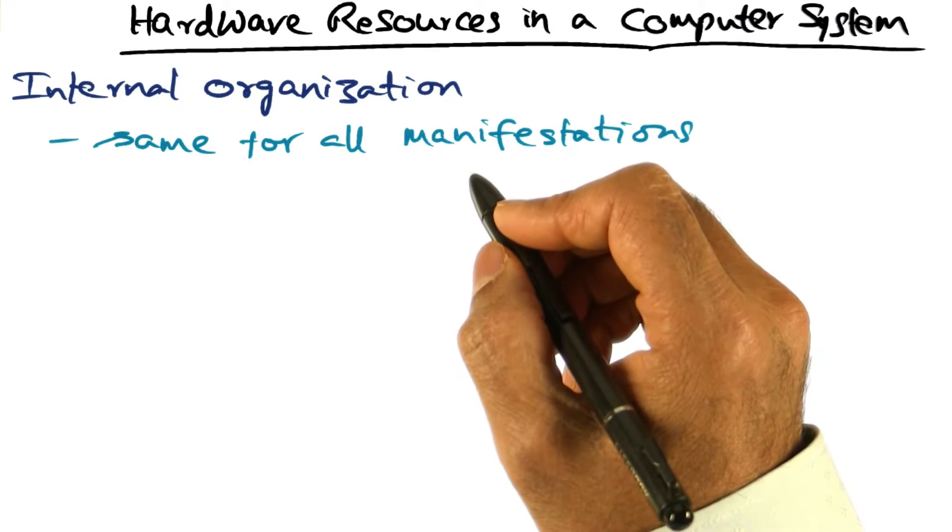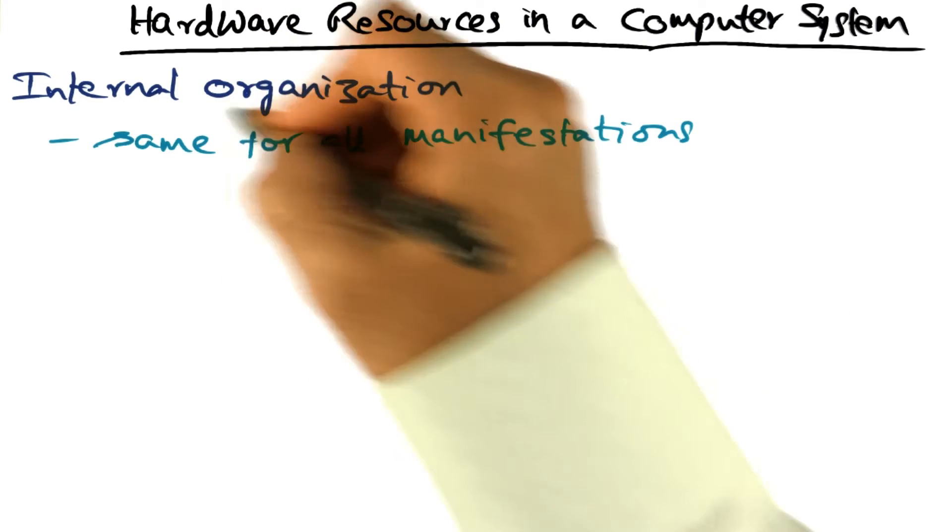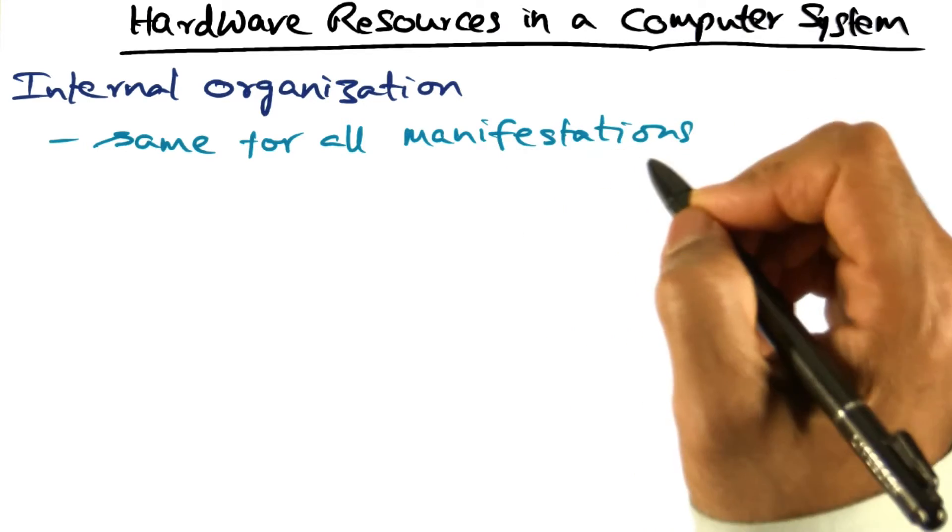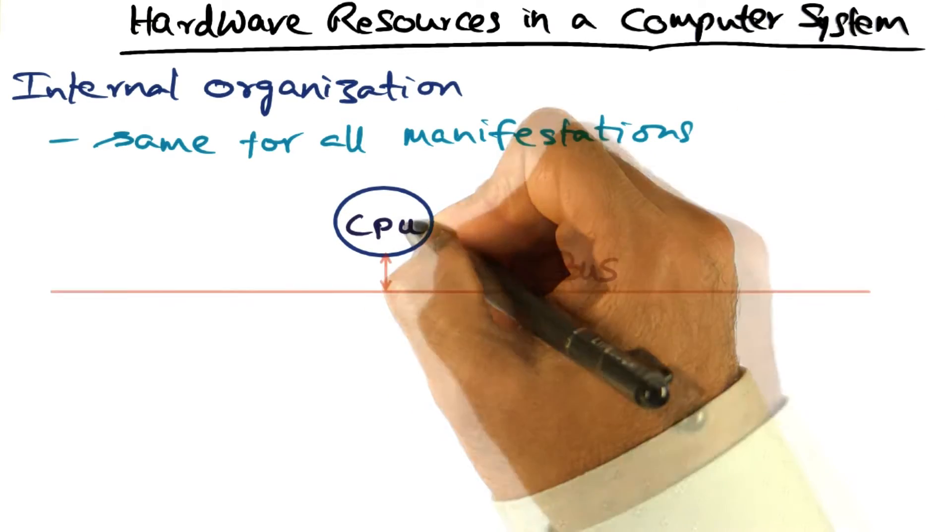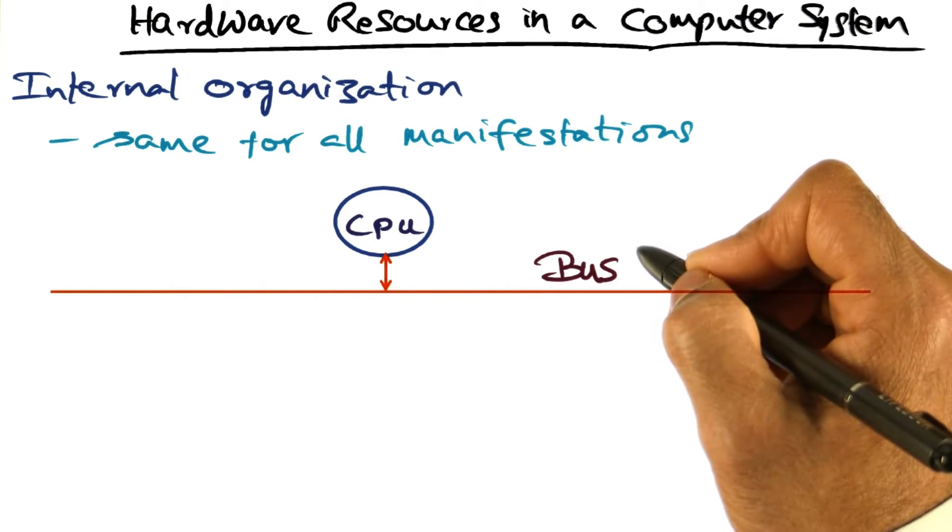Regardless of these different manifestations and sizes, the organization of the hardware inside the computer system is pretty much the same. You've got a CPU, and the CPU is connected to a conduit, which we call the bus.